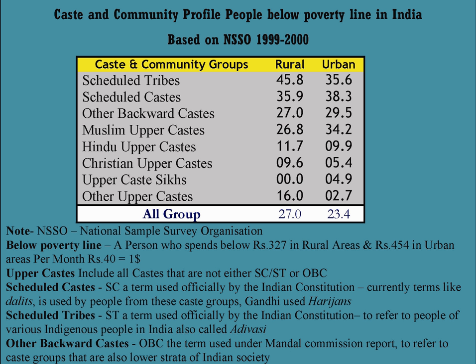Article 46 of the Constitution states that the state shall promote with special care the educational and economic interests of the weaker sections of the people, and in particular of the Scheduled Castes and the Scheduled Tribes, and shall protect them from social injustice and all forms of exploitation. The Supreme Court of India ruled in 1992 that reservations could not exceed 50%, anything above which it judged would violate equal access as guaranteed by the Constitution, thus putting a cap on reservations.